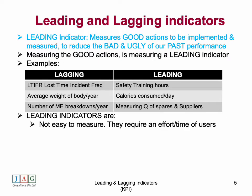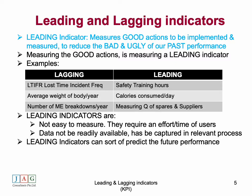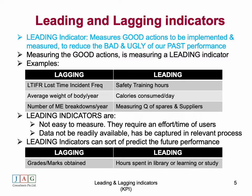Leading indicators are a bit of a challenge because the data is not easily available and it's not easy to measure — it requires effort and allocating resources. Data need not be readily available but has to be captured from relevant processes. Leading indicators can be called predictive because they tend to predict future performance. For example, for a child in school, grades and marks obtained are a lagging indicator, while hours spent studying or in the library are a leading indicator that could facilitate improving those grades.